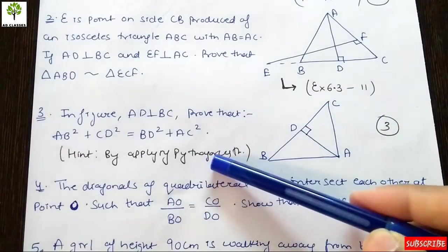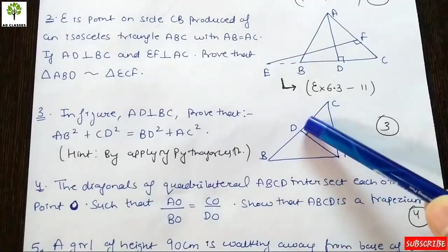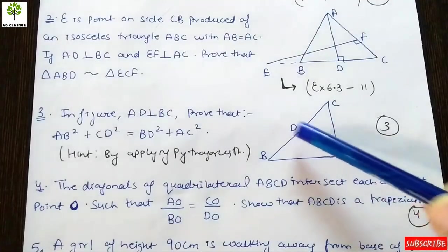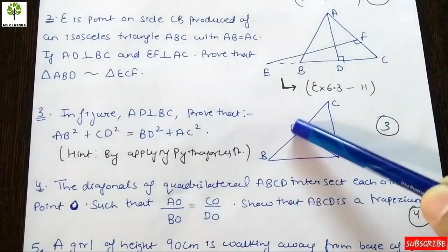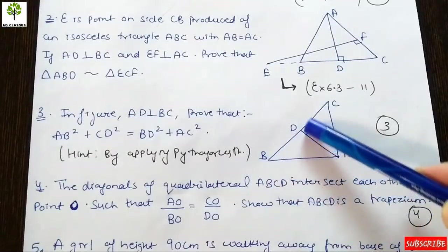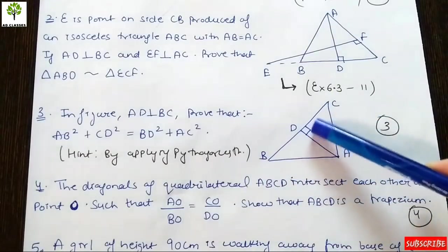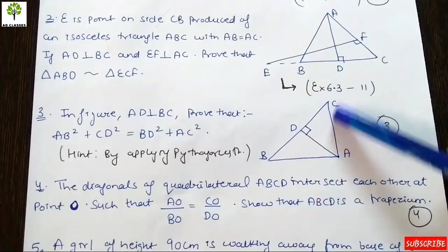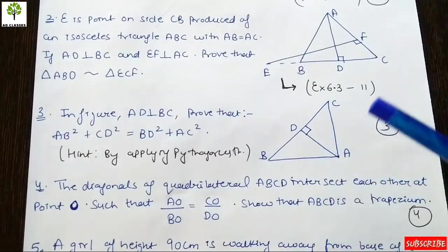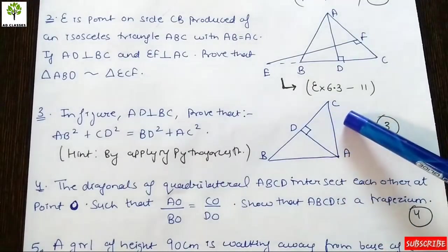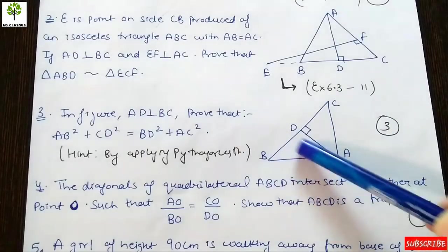If we apply Pythagorean theorem, angles ADC and ADB are 90 degrees. If you talk about angle ADC, AC is the hypotenuse. If we use this triangle...